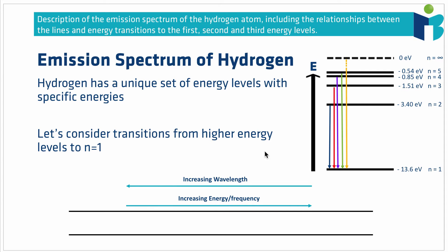Since there are an infinite number of energy levels, considering every possible transition would take a very long time. As a starting point, we're going to consider only transitions that go from higher energy levels down to n equals 1, the lowest energy level. These are shown in blue for the 2 to 1 transition, red for 3 to 1, purple for 4 to 1, and green for 5 to 1. There are many more transitions between 5 to 1 and infinity to 1, but we haven't drawn them all as it would be too messy.